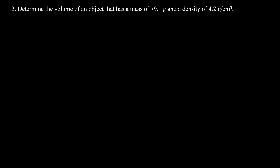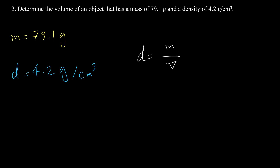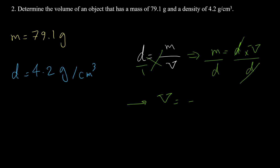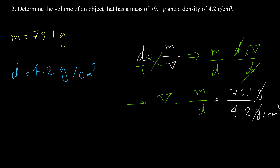Here is the second example: determine the volume of an object that has a mass of 79.1 grams and a density of 4.2 grams per cubic centimeter. The equation is D = m/v. To find volume, we rearrange to get V = m/d, so volume equals 79.1 grams divided by 4.2 grams per cubic centimeter. Grams cancel and the answer is 18.8 cubic centimeters.